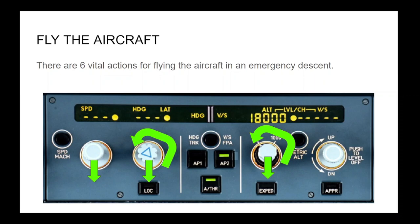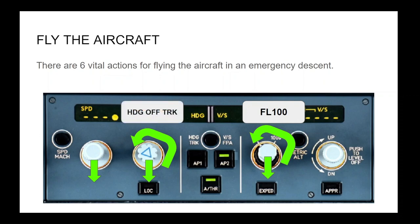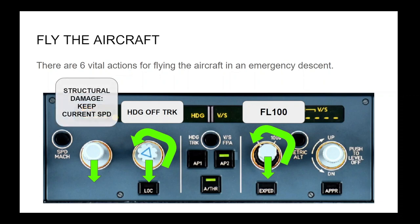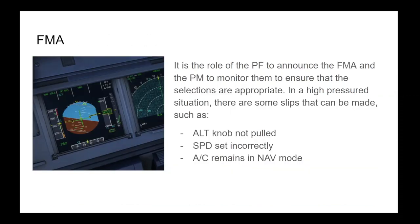The altitude knob should be set to flight level 100, unless there is terrain affecting this — in which case, set it to the relevant MSA. Set a heading off-track to minimize conflict with other aircraft below you. For speed, initially pull the knob; this is because if you have structural damage, Airbus recommends you keep your current speed. If you don't have structural damage, you can adjust the speed in the second step actions. It is the role of the PF to announce the FMA, and the PM to monitor them to ensure selections are appropriate. In a high-pressure situation, common slips include: altitude knob not pulled, speed not set correctly, or the aircraft remaining in NAV mode.